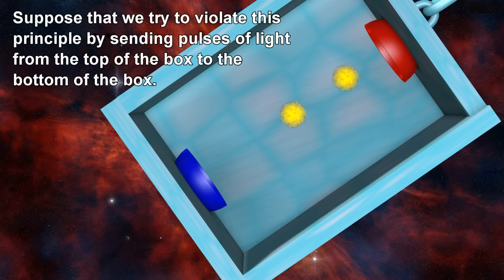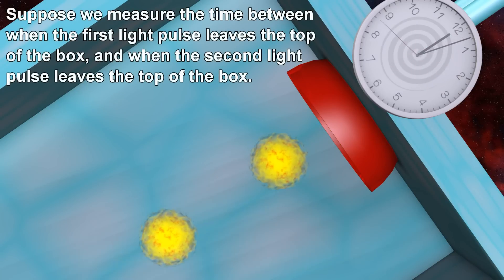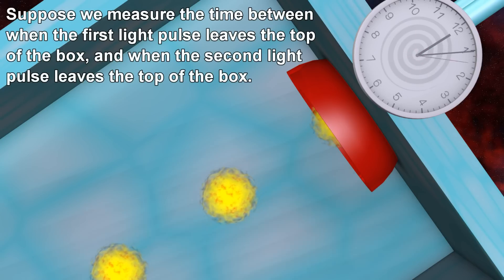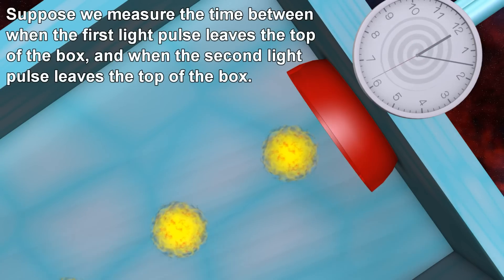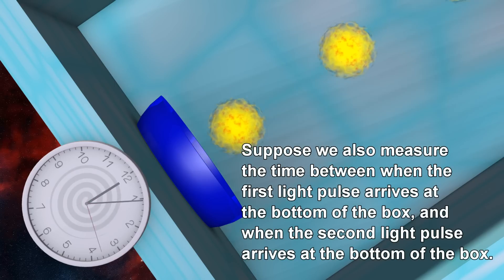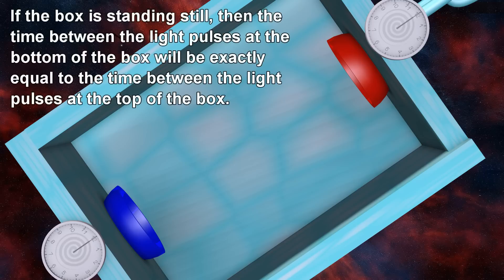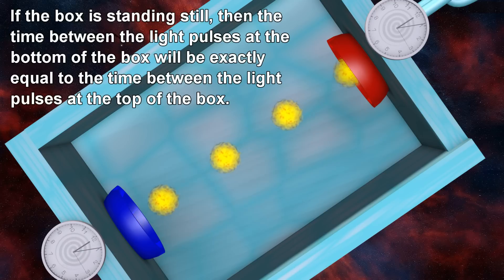Suppose that we try to violate this principle by sending pulses of light from the top of the box to the bottom of the box. Suppose we measure the time between when the first light pulse leaves the top of the box and when the second light pulse leaves the top of the box. We also measure the time between when the first light pulse arrives at the bottom of the box and when the second light pulse arrives at the bottom of the box. If the box is standing still, then the time between the light pulses at the bottom will be exactly equal to the time between the light pulses at the top.